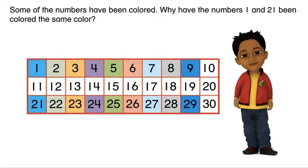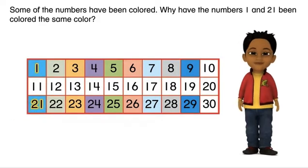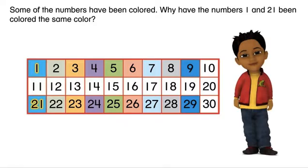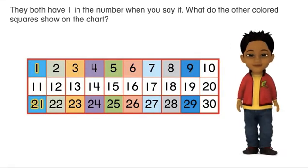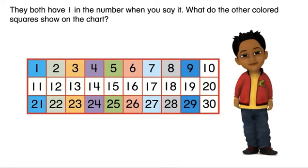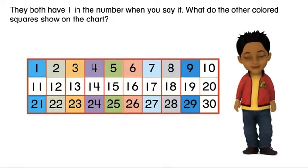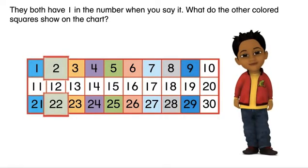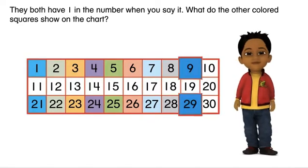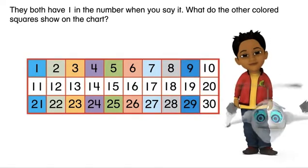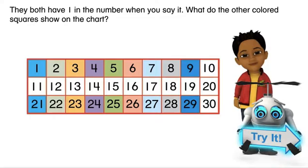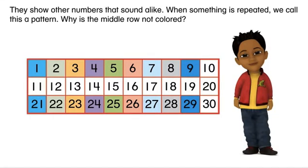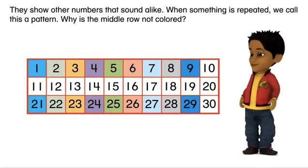Why have the numbers 1 and 21 been colored the same color? They both have 1 in the number when you say it. What do the other colored squares show on the chart? They show other numbers that sound alike.